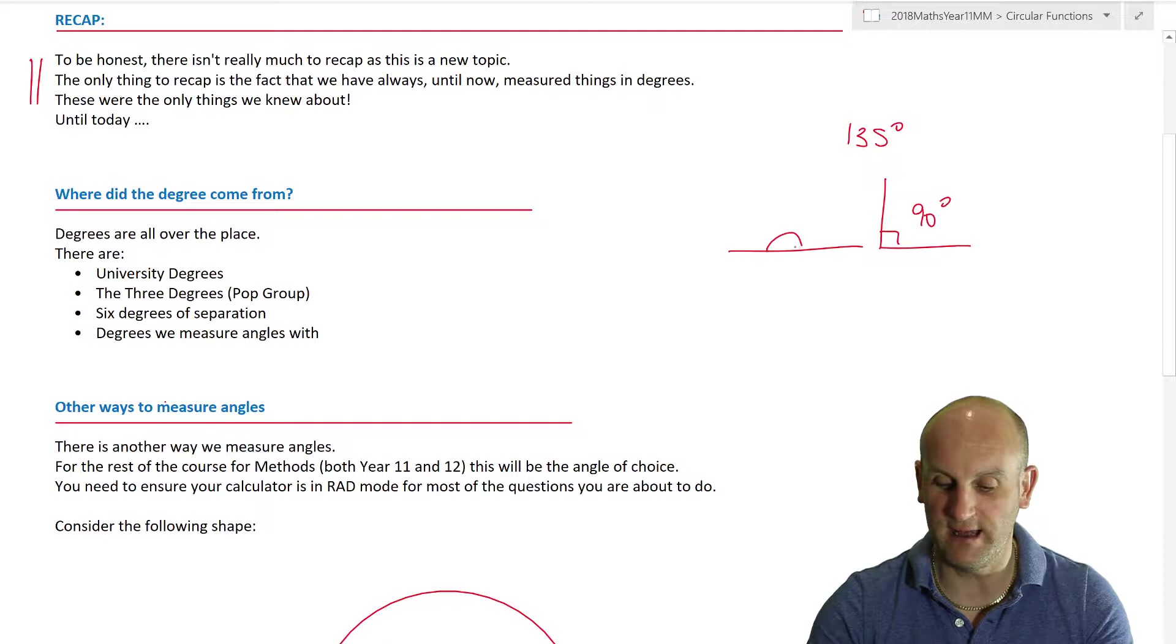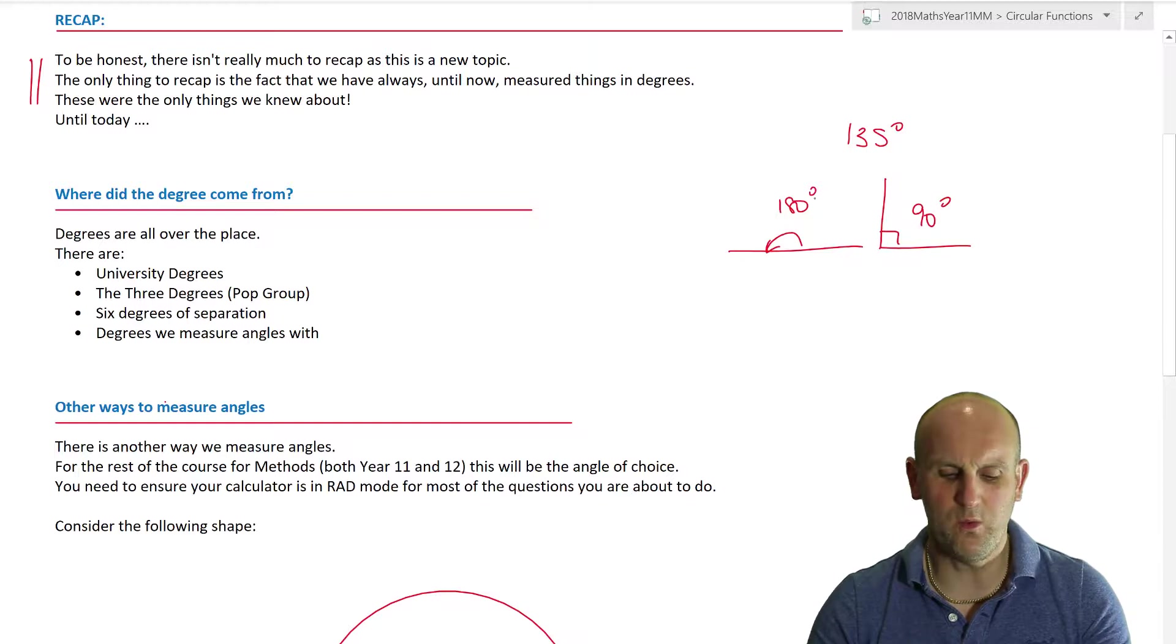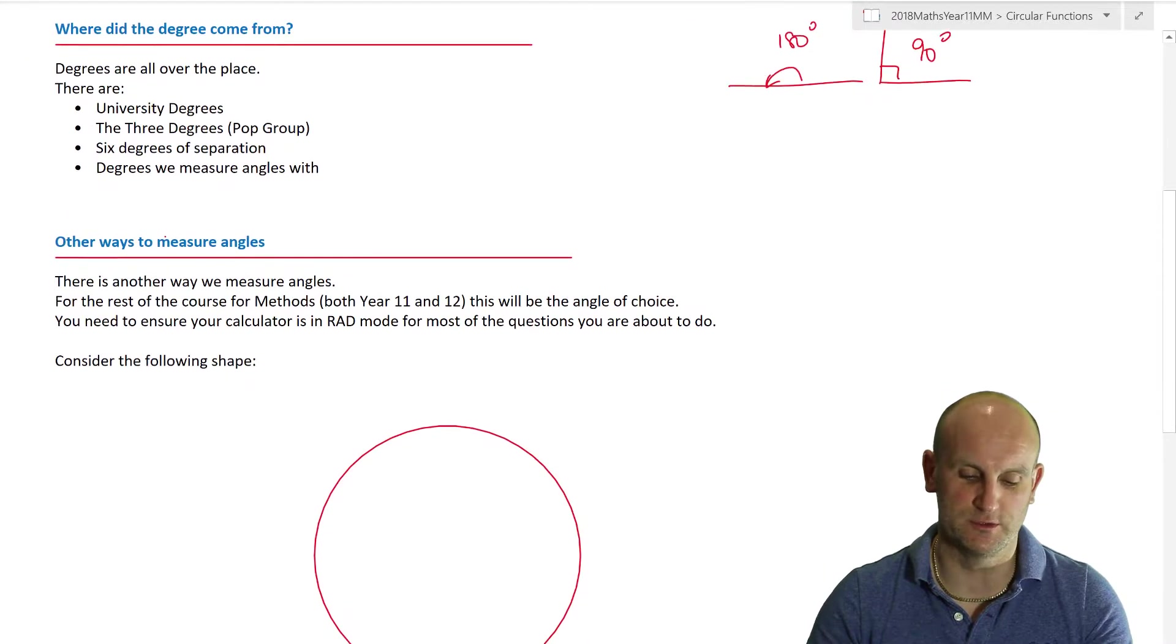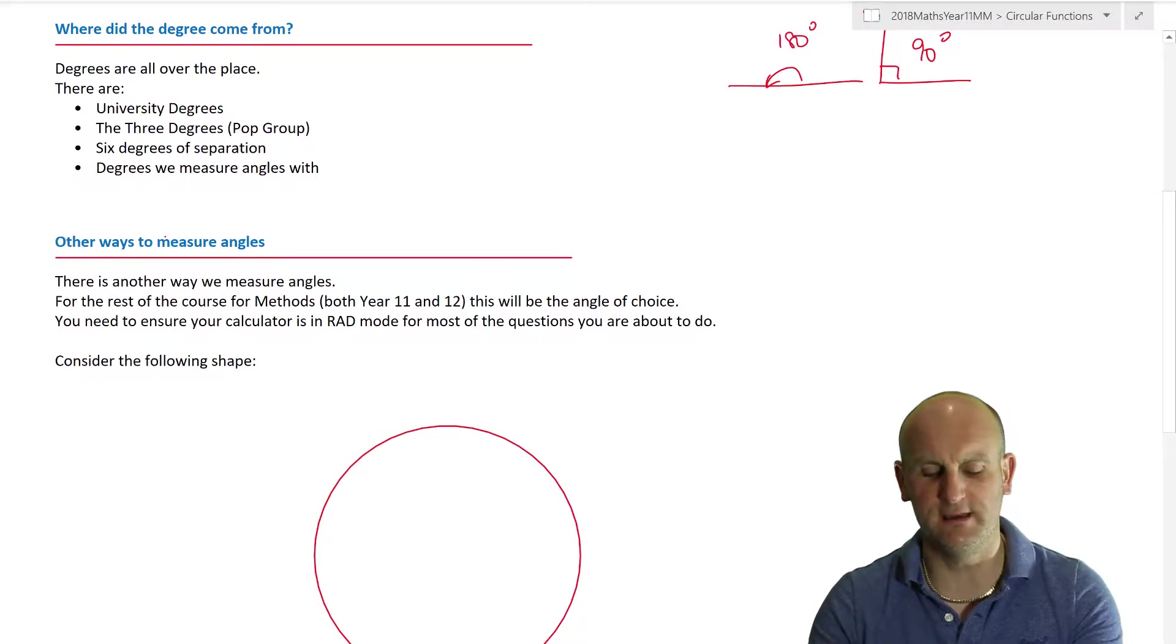The whole concept of drawing an angle of 135 degrees was painful. But the point is, we've always mentioned angles. We know that this thing here is a right angle and is made up of 90 degrees. We know angles on a straight line add up to 180 degrees, which also happens to be two right angles. Well, I suppose the question is, where did this degree come from? In fact, what is a degree?